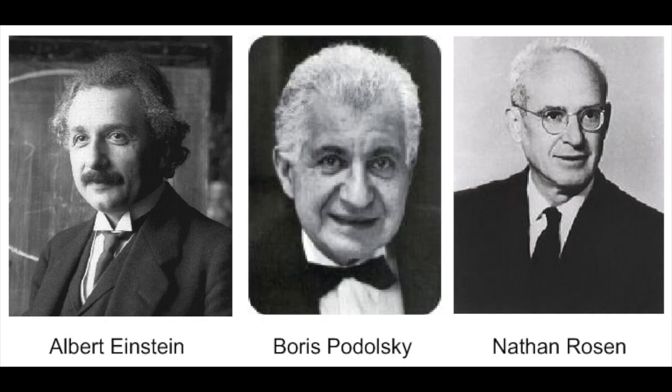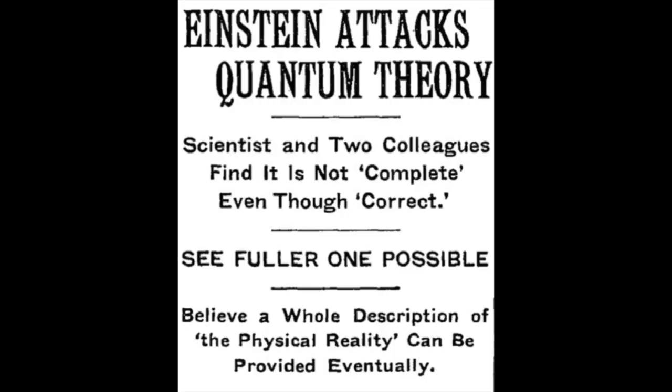The phenomenon of quantum entanglement was first described in the famous EPR paper by Einstein, Podolsky, and Rosen in 1935. They proposed it as a paradox to challenge the completeness of quantum mechanics.